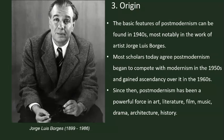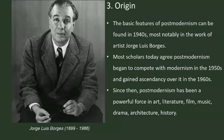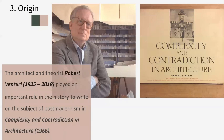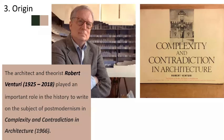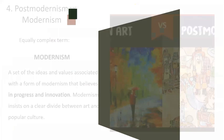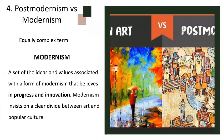Since then, postmodernism has been a powerful force in art, literature, film, music, drama, architecture, and history. The architect and theorist Robert Venturi played an important role in the history of the field as one of the first authors to write on the subject of postmodernism, in his book 'Complexity and Contradiction in Architecture,' published in 1966.